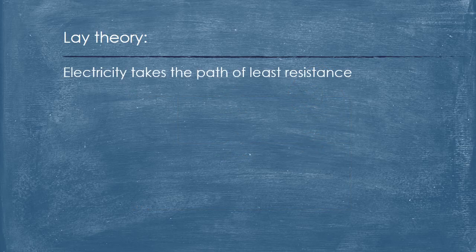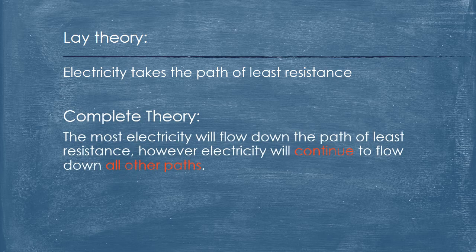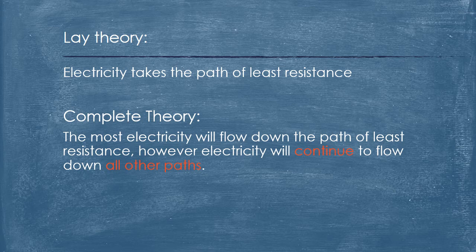So going back to our lay theory, that electricity takes the path of least resistance. Well, demonstrably, that is not correct. So here is the proposed more complete theory, and that is the most electricity will flow down the path of least resistance. The most electricity will flow down that tree, flow into that fault, set it on fire. However, electricity will continue to flow down all other paths available to it.